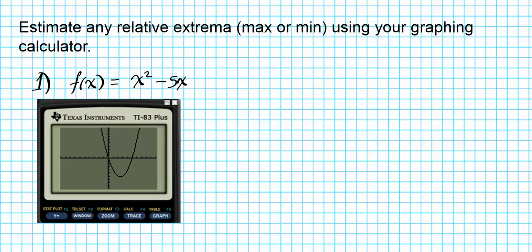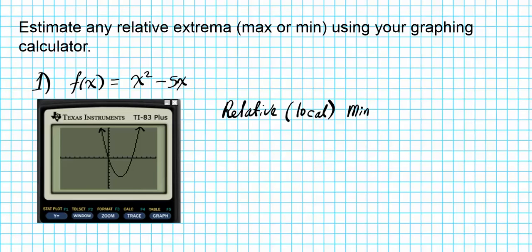Here's a snapshot of the calculator's graph. We have a quadratic function that increases toward positive infinity on the right and negative infinity on the left. We're looking for the relative extrema — specifically the relative or local minimum. Think about minimums as the low points of your function.